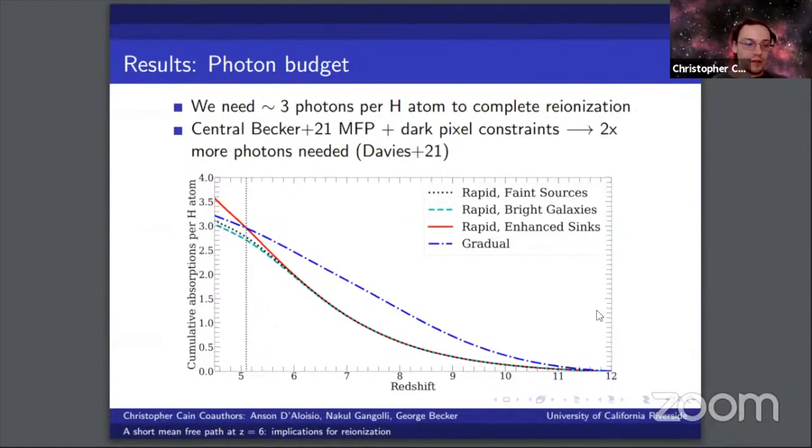Now the recent work of Davies et al. 2021 found that if the central mean free path measurement at redshift 6 and existing dark pixel constraints are both assumed, the number of photons required to complete reionization increases by a factor of two, which would put even more stringent demands on high redshift sources.